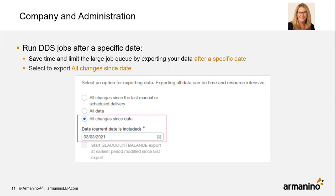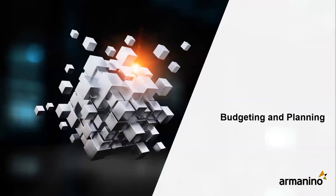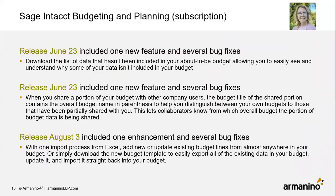DDS stands for Data Delivery Service — something Intact offers if you have a lot of data that needs to be exported from Sage Intact to somewhere else. For budgeting and planning, there were no new features specific to this module in this release, but Intact is doing improvements ongoing all the time. On June 23rd, there were several bug fixes and one new feature: you can now download the list of data that hasn't been included in your about-to-be budget, so you can easily understand why data isn't included.